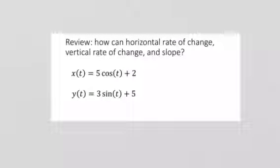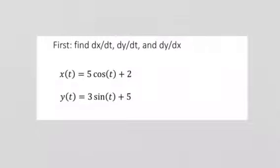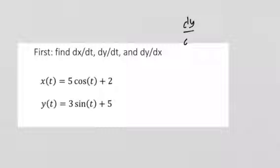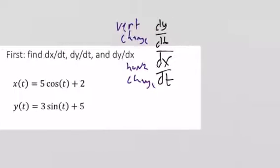We can also think about the rate of change of x and y, and the slope of the curve. We can find dx/dt and dy/dt, and dividing dy/dt by dx/dt — where dy/dt is the vertical change with respect to time and dx/dt is the horizontal change with respect to time — simplifies to dy/dx, which is our slope.